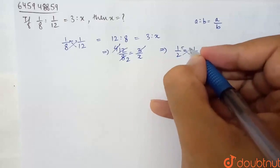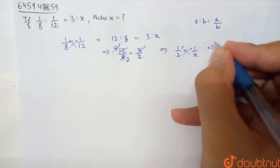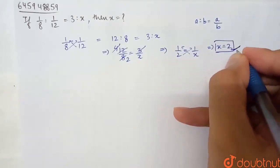Now what do I do here? Again cross multiply: x is equal to 2. Hence, this is the required value of x.